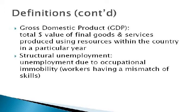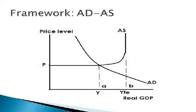Structural unemployment is caused by workers not having the correct skill set for a specific job, causing the worker to be unable to find a job. The economic framework we will be using to illustrate the possible impacts of the policies is the AD-AS framework, in which the AD and AS graphs intersect at a point to create an equilibrium level of national income, or GDP, and general price level. This point represents the full employment level of national income, in which no further resources can be used.